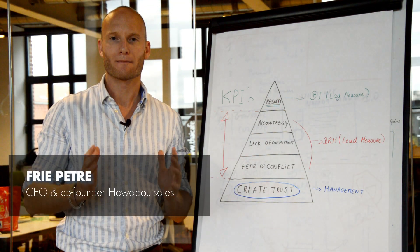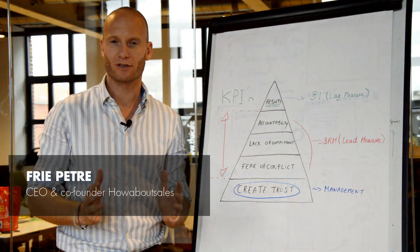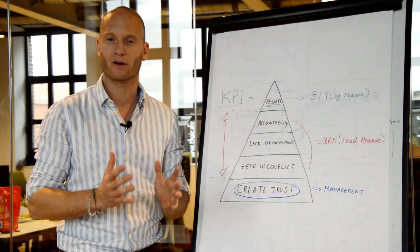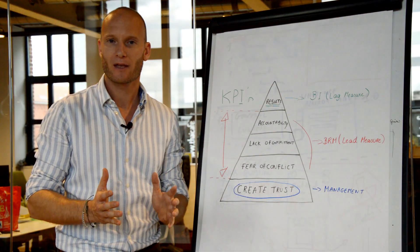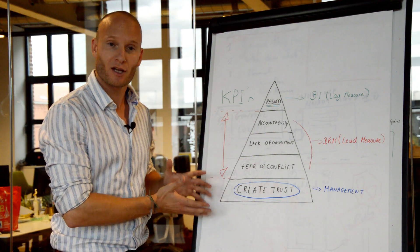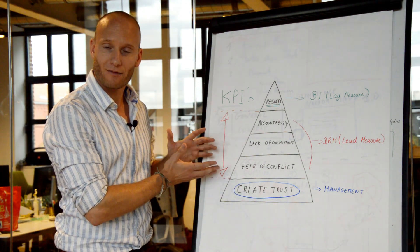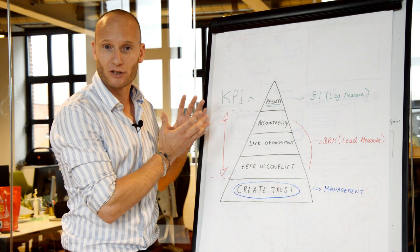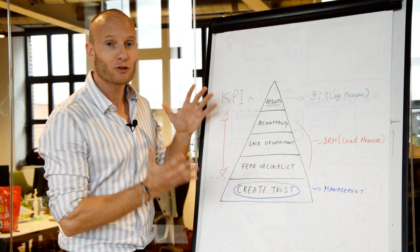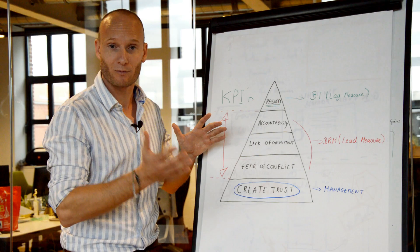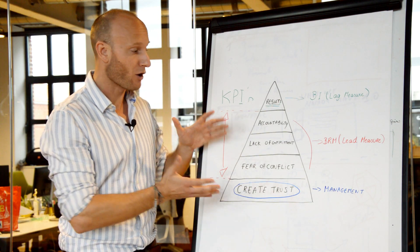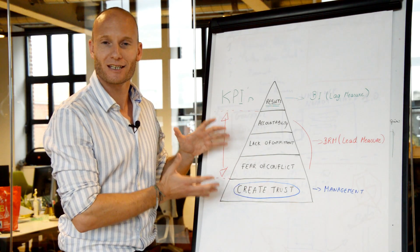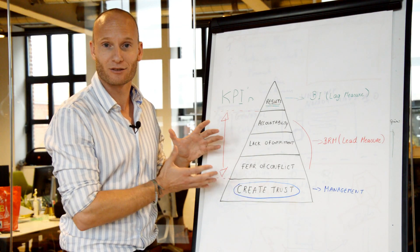How to achieve great business results. In one of our videos we explained the five dysfunctions of a business relationship. These were trust, conflict, lack of commitment, accountability, and attention to results. Now today I'm not going to explain them again — you can watch one of our videos for more detail on what it all means. But today I want to explain how you can put this into practice in your organization.